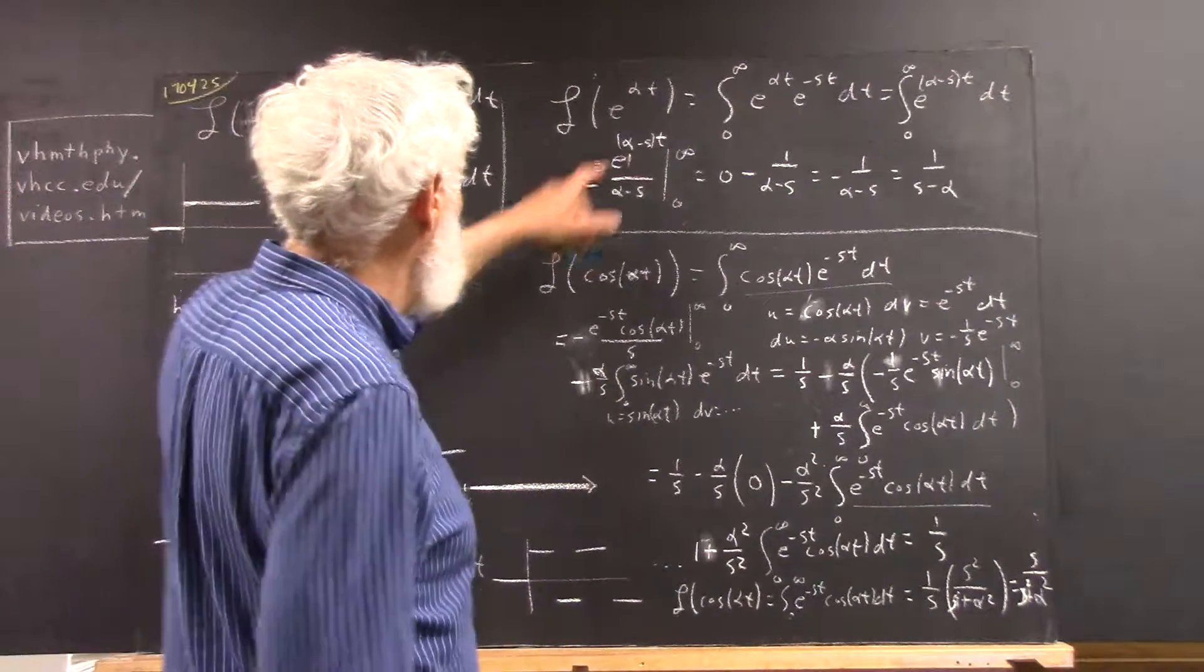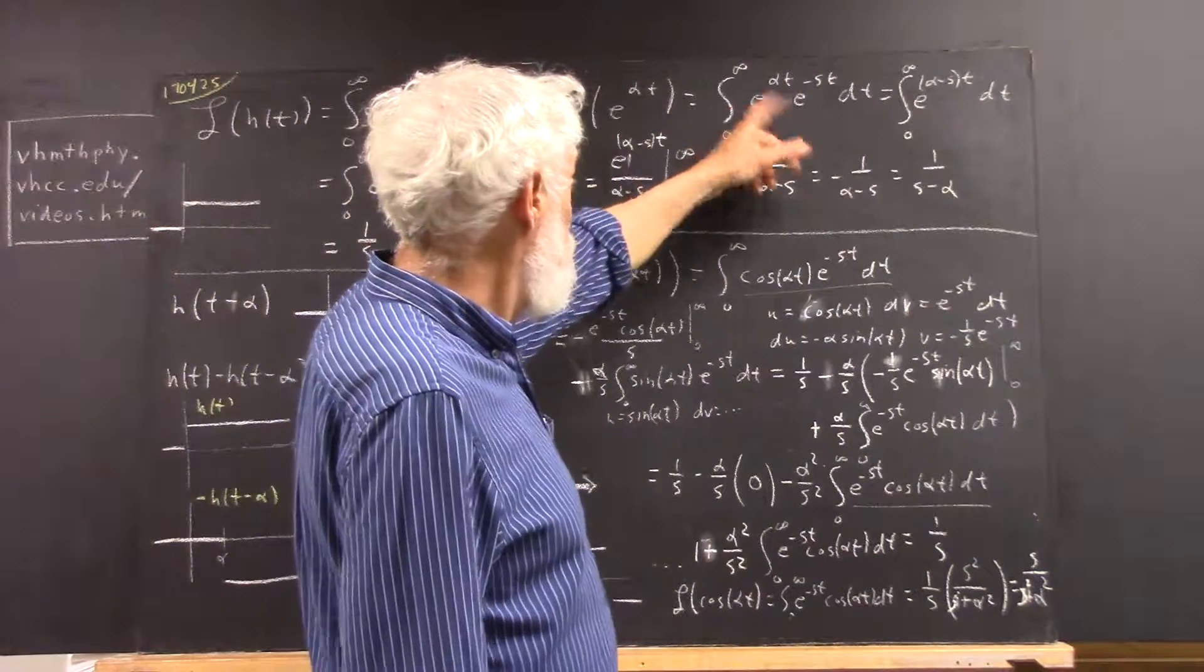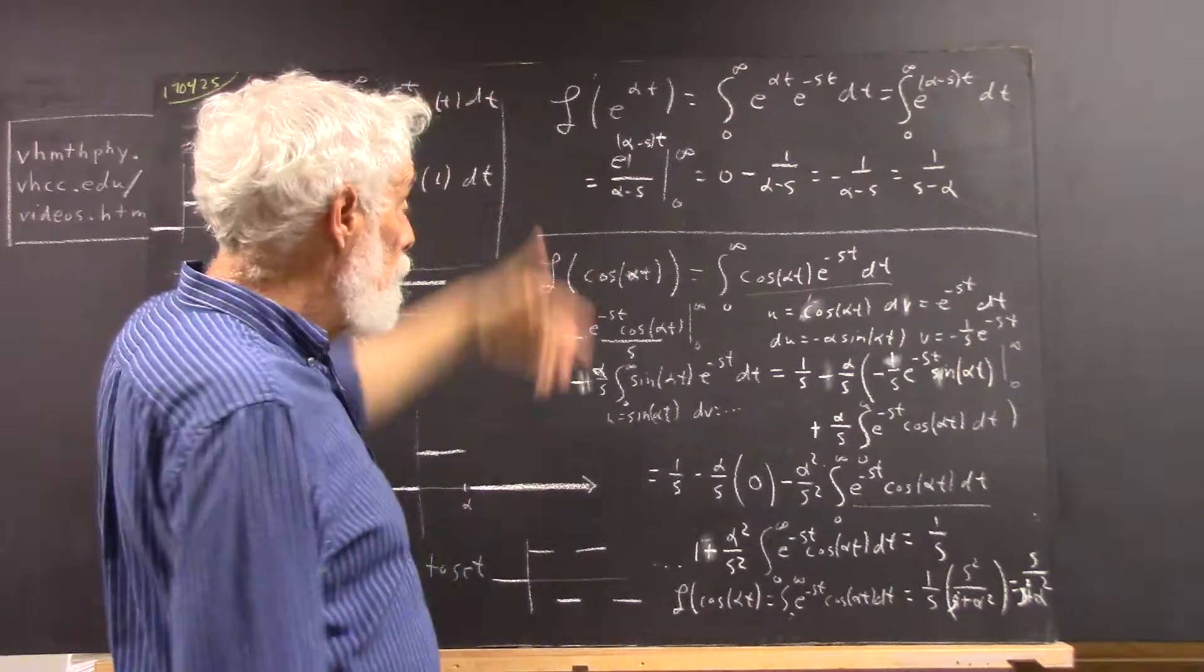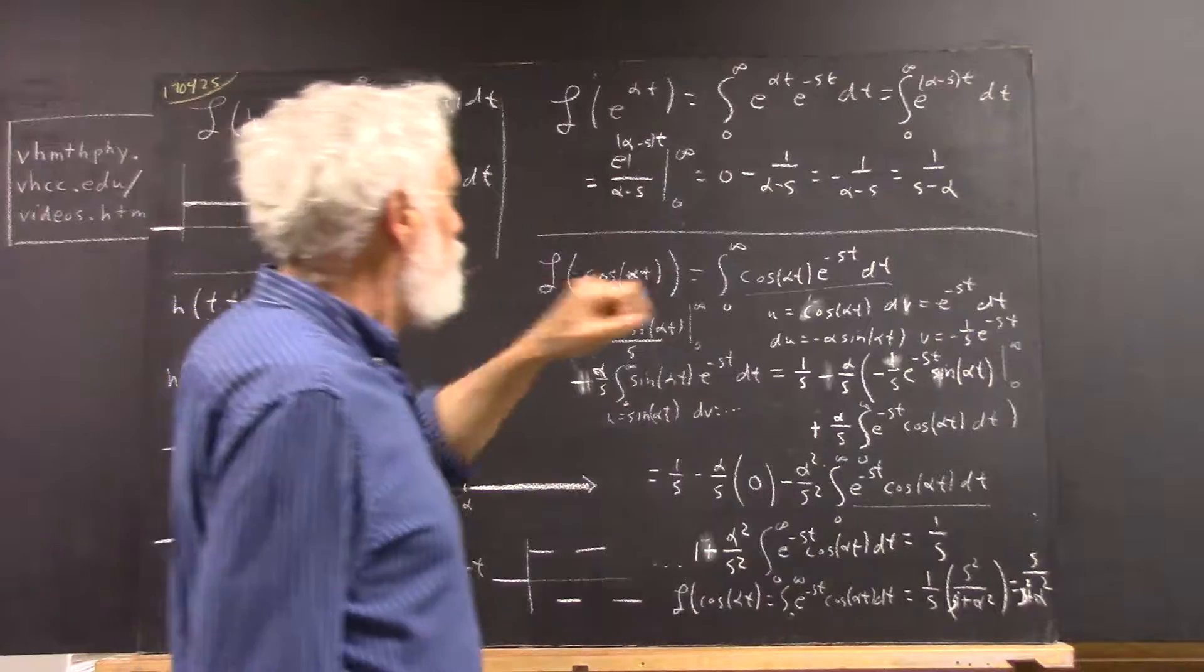Okay, the Laplace Transform of e to the alpha t. Well, we just write it out. We use e to the alpha t for our f of t function, and we get this.